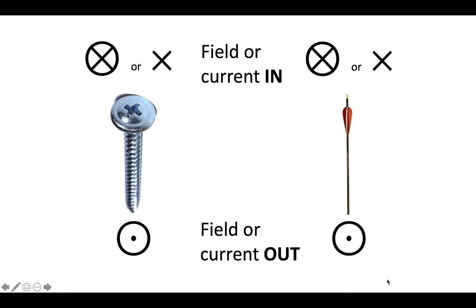For a front-back view we need to use a certain symbology. The symbology looks like it's based on the cross-head or Phillips screw, or possibly an arrow. If you have a current going into the screen - into the page - or a field that goes into the screen, you use a cross or a circle with a cross inside, which looks like a cross-head screw pointing away from you. Conversely, if a current is coming out towards you, or a field is coming out towards you, you use a circle with a dot in it, or just a dot. A 'cross field' or 'dot field' refers to magnetic or electrical fields where the field lines are pointing away from or towards you.